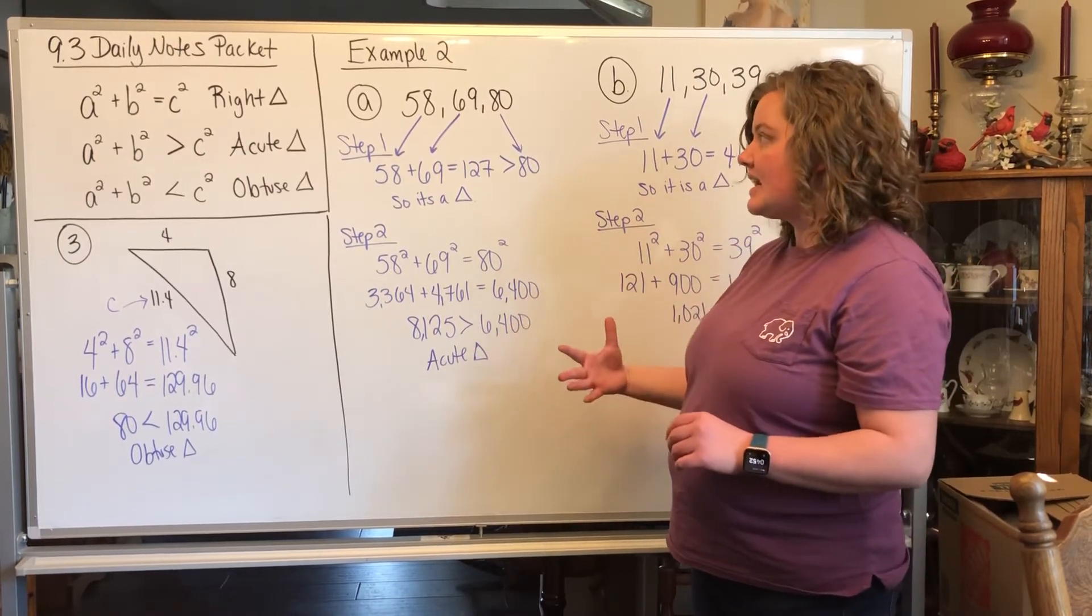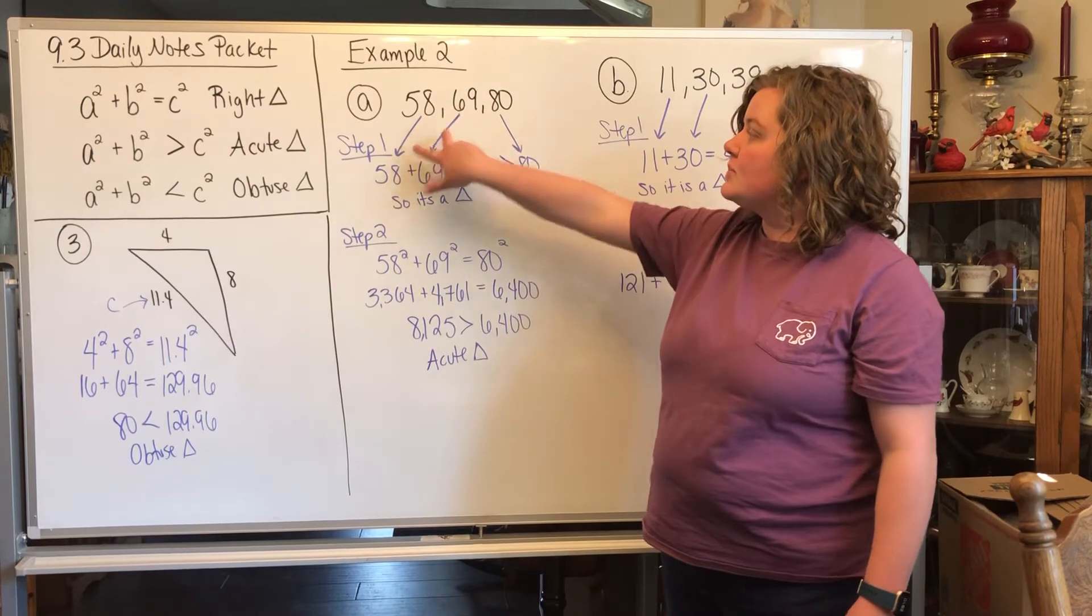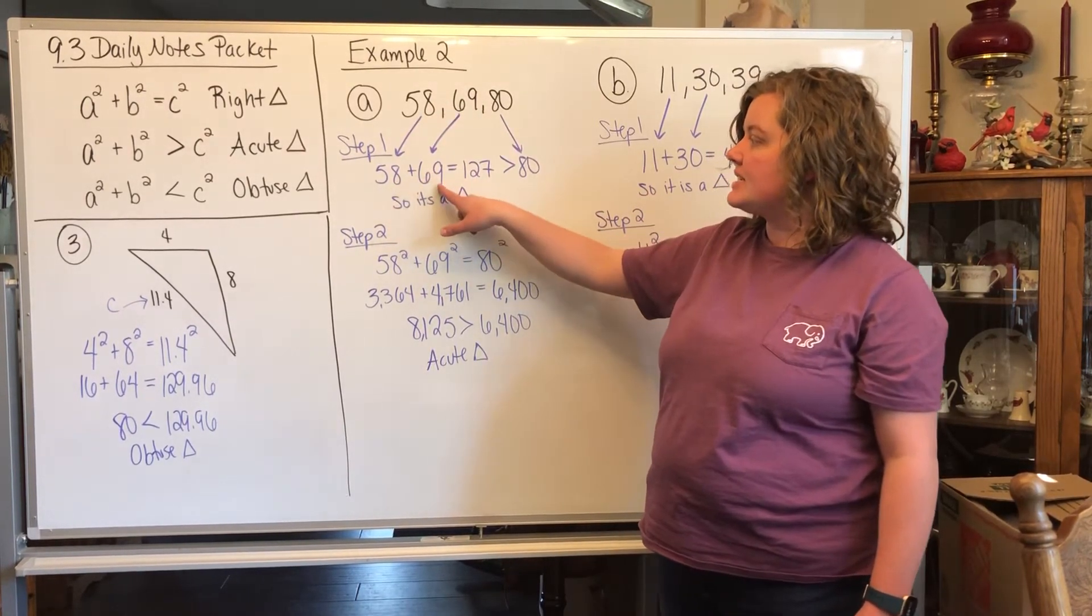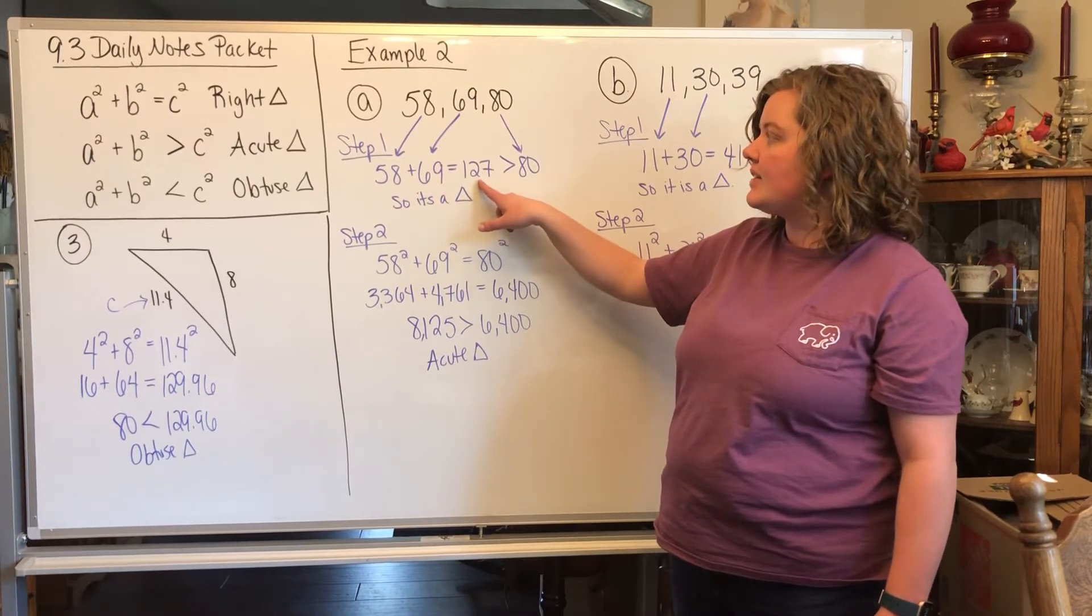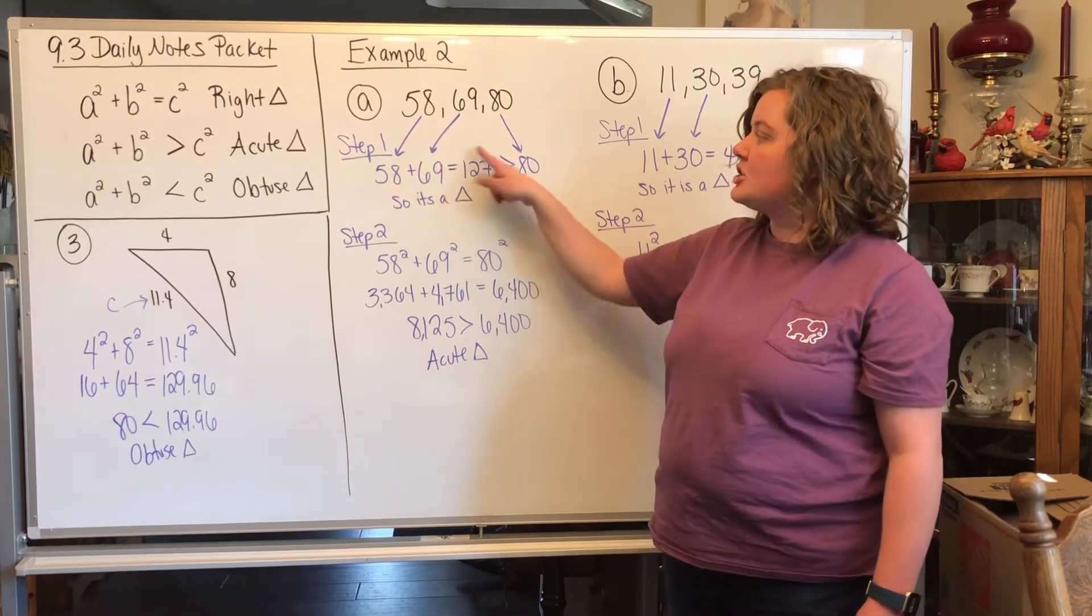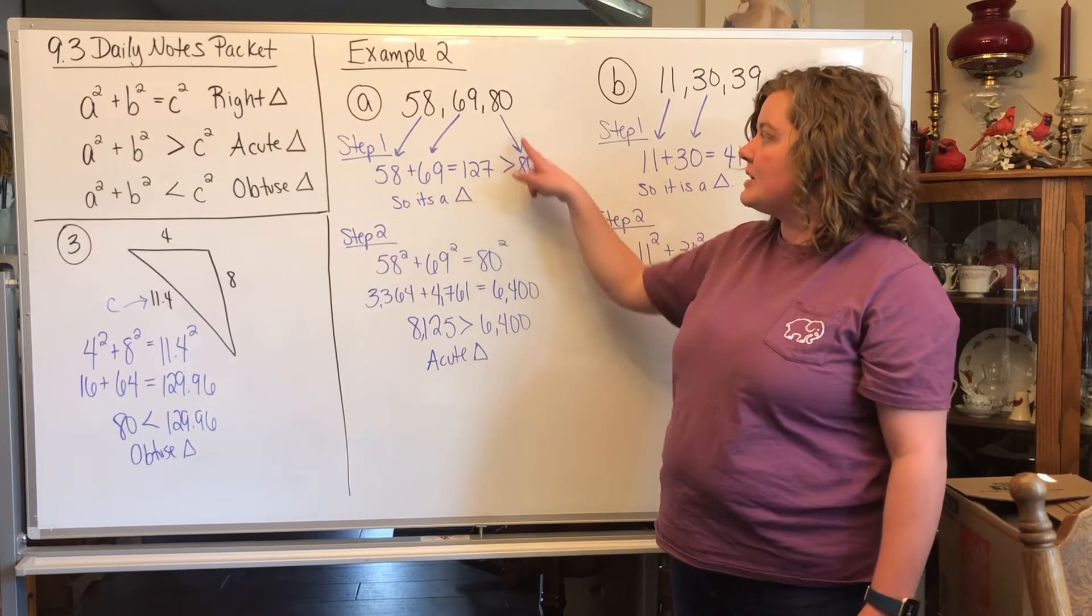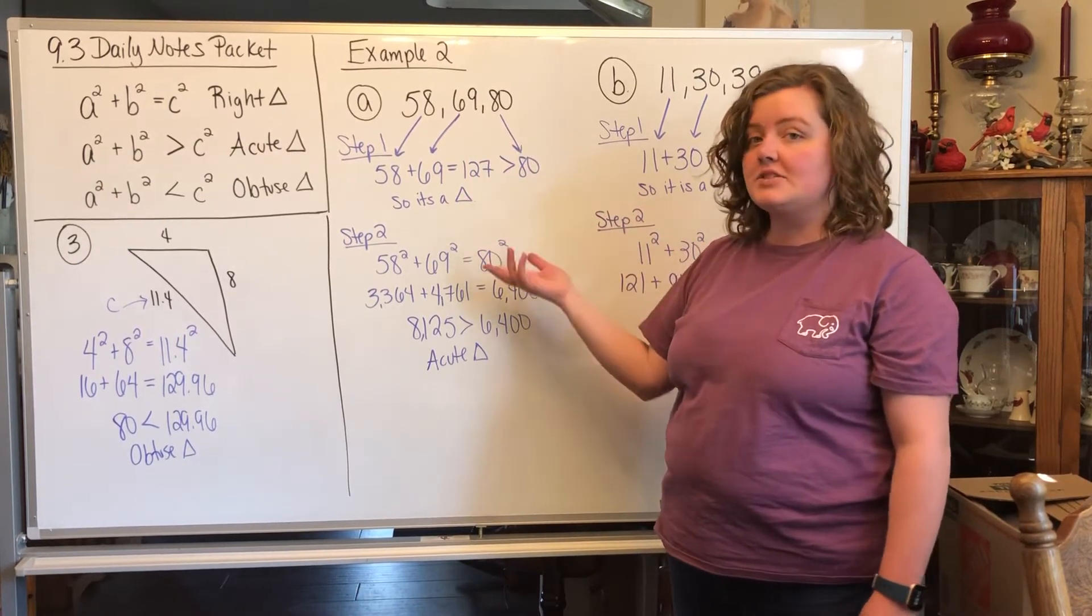So what that basically says is if you add the two smallest numbers together, so in this one we're doing 58 plus 69, you get 127. When you add them together, they should be bigger than the third side. So 127 is bigger than 80, so that means this is a triangle.